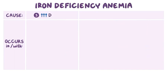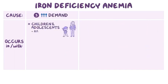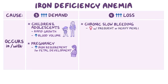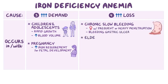Increased demand can occur in children and adolescents, because they're rapidly growing and increasing in blood volume, which requires them to make more hemoglobin. It may also occur during pregnancy, because of the increased iron requirements for fetal development. Increased iron loss generally occurs in people with chronic slow bleeding, because iron is lost along with red blood cells. This includes females with frequent or heavy menstruation, or people with bleeding gastric ulcers, and most importantly, elderly males with colon cancer, because the tumor can bleed and cause anemia. In fact, the first symptom of colon cancer is often iron deficiency anemia.